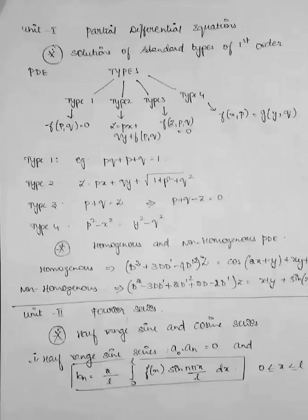There are 4 types: type 1, type 2, type 3, and type 4. The first type is of the form f(p,q) = 0. If there are only two variables, p and q, then it is the first type. Below I have given an example: pq + p = q = 1. If the question is in this format, then it is a type 1 sum.